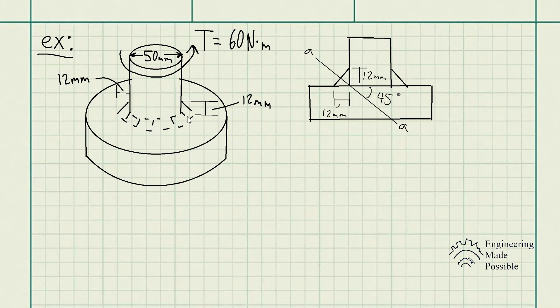So here we have this shaft being welded on using the fillet weld here, and you can see the dimensions given. We have the height as well as the width being 12 millimeters, and the diameter of the shaft being welded onto the plate is 50 millimeters.